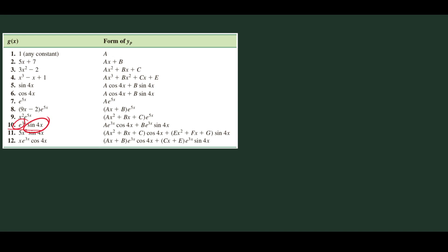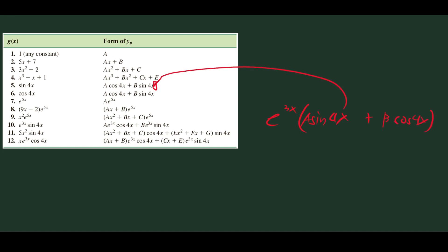For example 10, we have e raised to 3x multiplied by sine 4x. The form is e raised to 3x times (a sine 4x plus b cosine 4x). Remember this comes from the trig rule we discussed — you just multiply the exponential by the trig form.